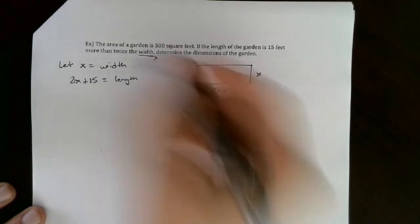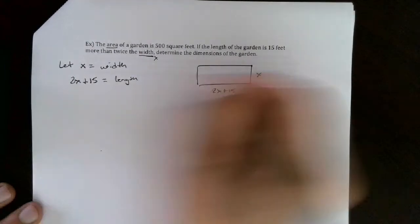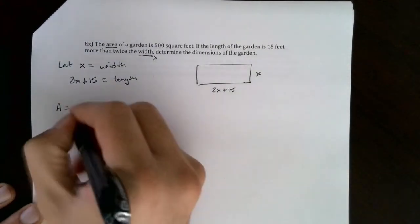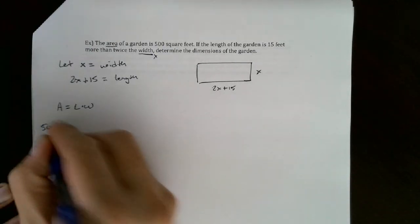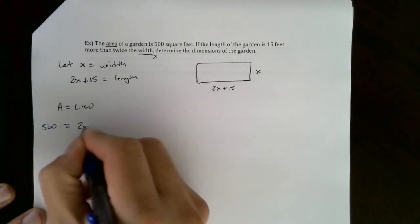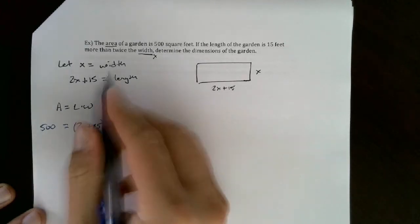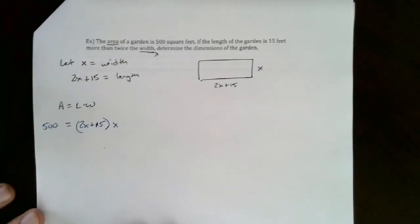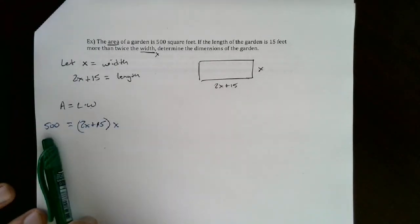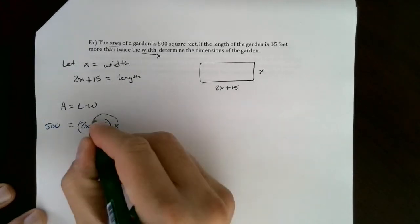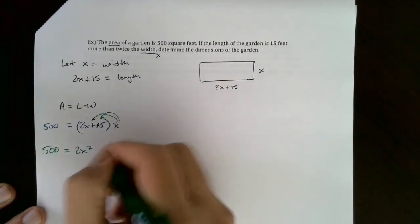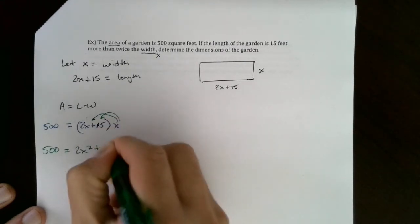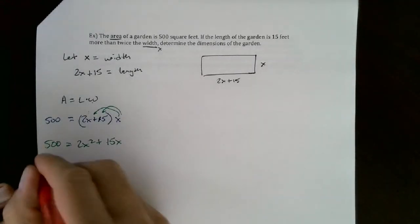Now it asks us to find the dimensions, and that's going to be based on what they told us - the area is 500 square feet. The area of a rectangle equals length times width. So the area is 500, which equals the length (2x + 15) times the width (x). To solve this, remember you can't just set each factor equal to 500 - that only works if one side is zero. So distribute x in: 500 = 2x² + 15x.